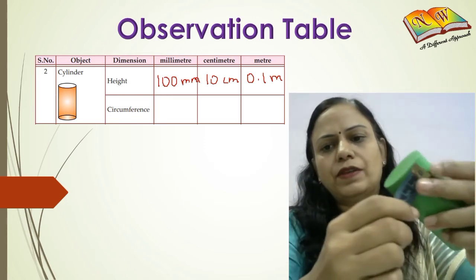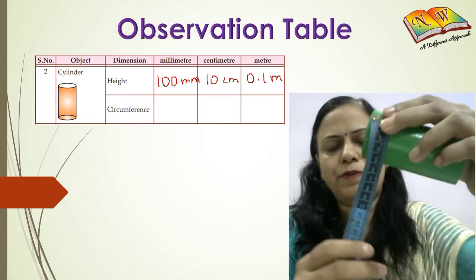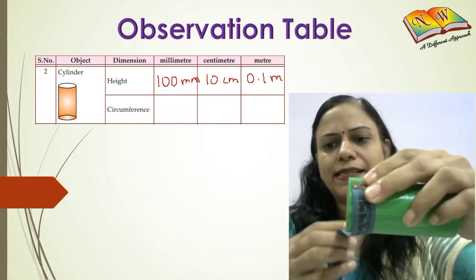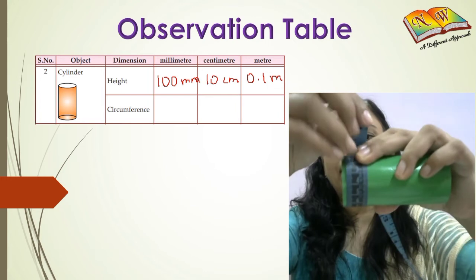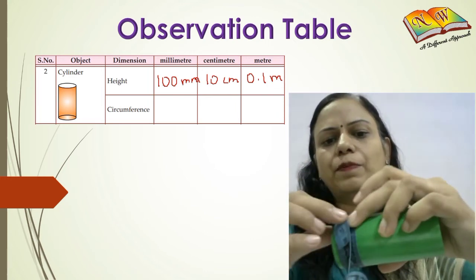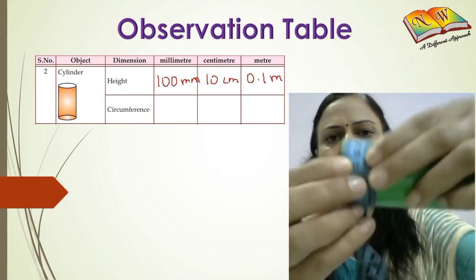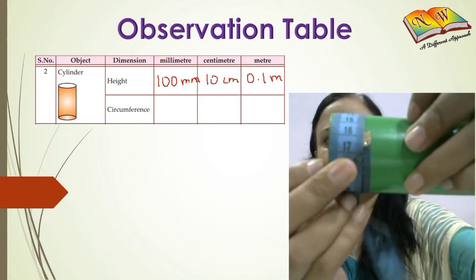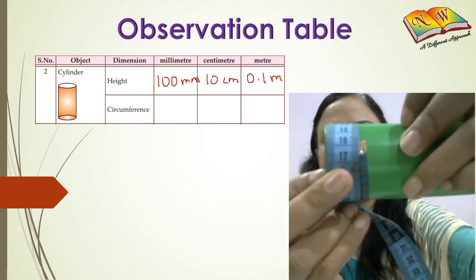So on the tape, I am using the dimension of centimeters. I placed it here, I wrap it around like this, and when it reaches here, the point where it's overlapping shows 16 centimeters.